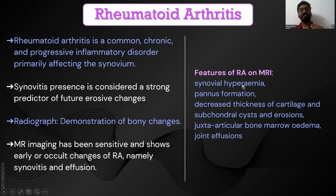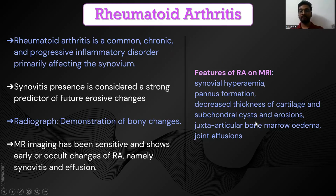The features of RA on MRI include synovial hyperemia, sinus formation, decreased thickness of cartilage, sub-chondral cysts and erosions, juxta-articular bone marrow edema, and joint effusions, which can also be seen in rheumatoid arthritis.